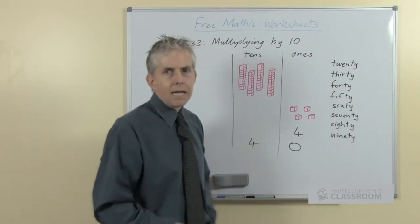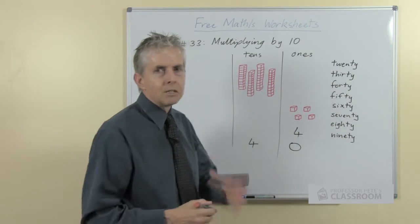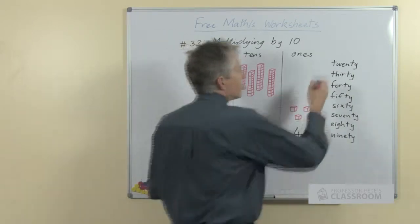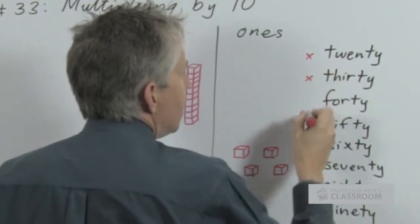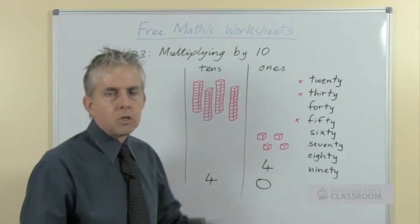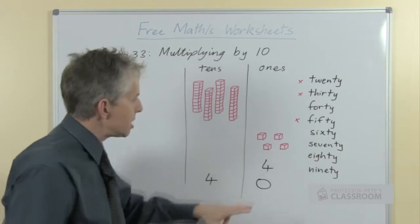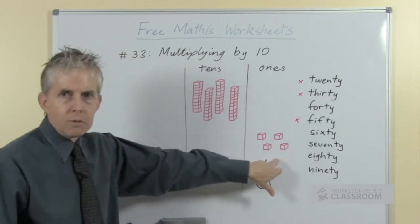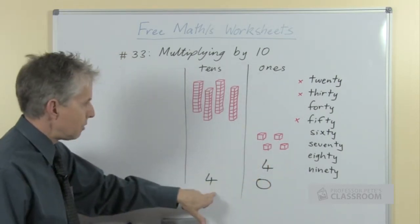There are some tricky aspects to this, some inconsistencies. These examples here—20, 30, and 50—don't reinforce the connection between the name for the number of ones and the name for the number of tens.